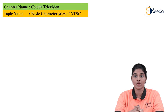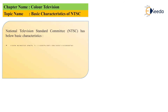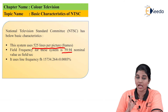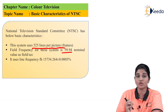The first characteristic is that the system uses 525 lines per picture or per frame. The field frequency for the system is 59.94 nominal value as fields per second, or 60 Hertz. It uses a line frequency FH equals to 15,734.264 plus or minus 0.0003%, which provides accurate and minute scanning of the system.